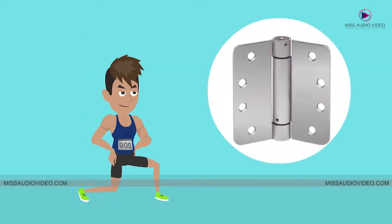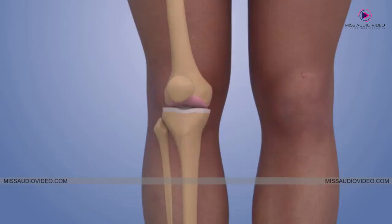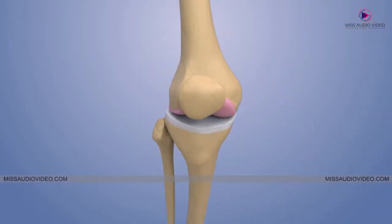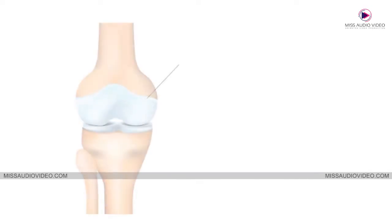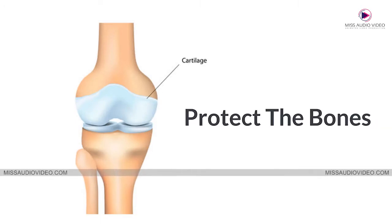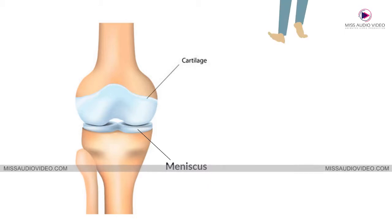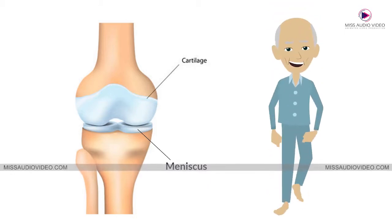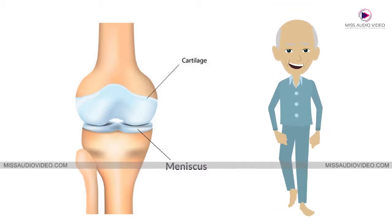The knee is a simple joint that works like a hinge. The knee flexes and extends like a door opens and closes. There are protective layers of cartilage between the bones where the knee joint moves. The cartilage, which includes thick meniscus tissue, absorbs shock and allows for smooth motion.